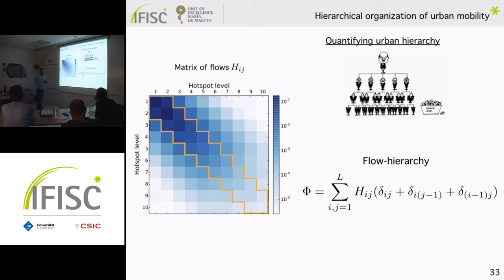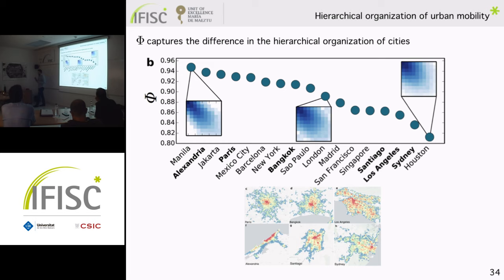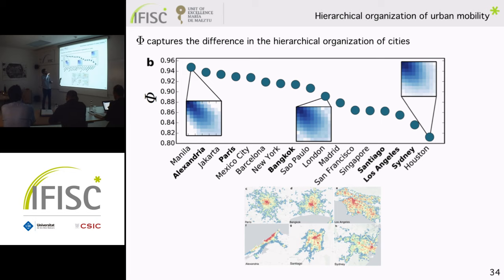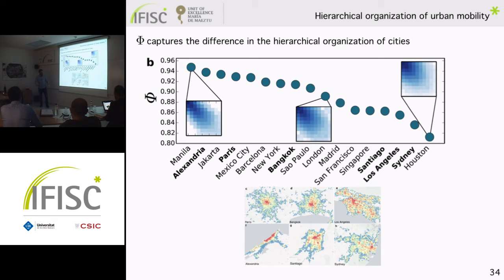The flow hierarchy φ is continuously distributed. In some cities it is quite high — 0.94 means 94% of trips occur between hotspots of the same or consecutive level. The value of φ captures the general structure of the matrix: the higher it is, the more flows are concentrated near the diagonal. There is also a relation between φ and the spatial distribution of hotspots: Paris and Alexandria, which had clustered hotspot levels on the map, have the highest values of φ, while Los Angeles and Sydney — which showed higher mixing — have lower values.